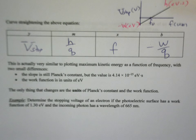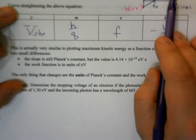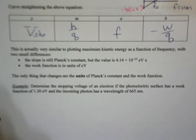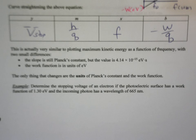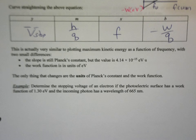The only thing to watch for is units. On a plot of stopping potential versus frequency, Planck's constant will be in electron-volt seconds and the work function in electron volts. If you plot Ek as a function of frequency, Planck's constant will be in joule-seconds and the work function in joules. A common exam trap is to test whether you're paying attention to the axes — they'll try to trick you with the units. Be really careful; it catches a lot of people. Pay attention to what's plotted.